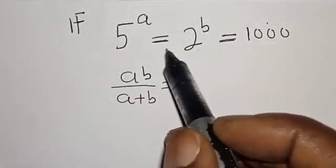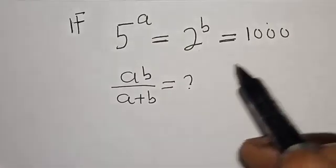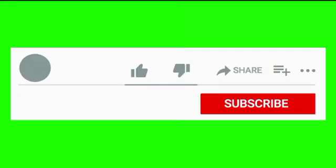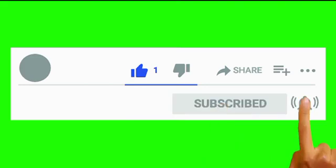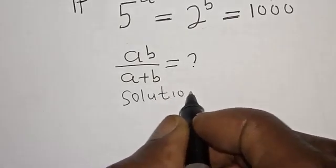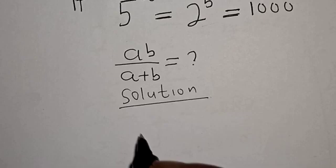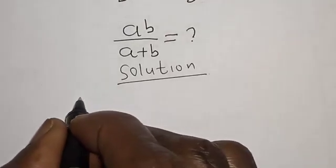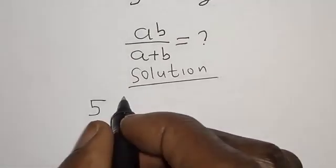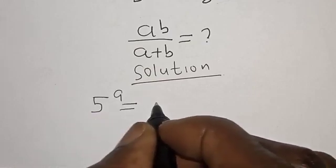But before we proceed, please don't forget to like, share, comment and subscribe. Thank you. Solution: we have the given equation 5 raised to power a is equal to 2 raised to power b is equal to 1000.